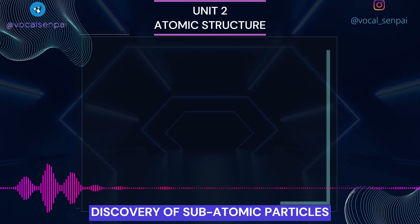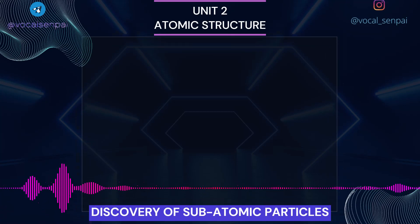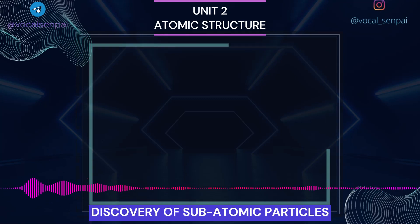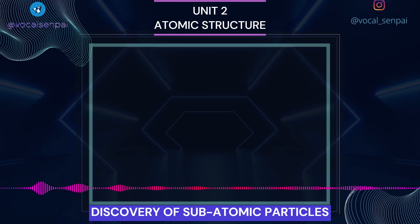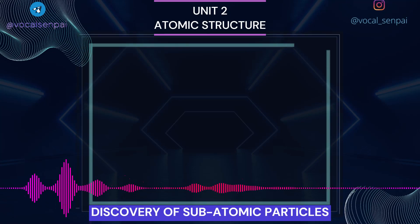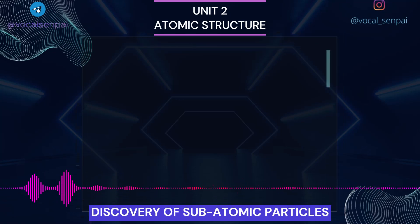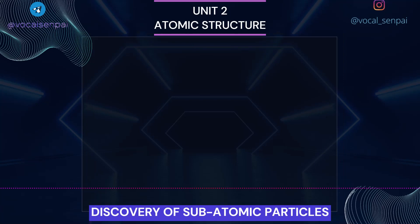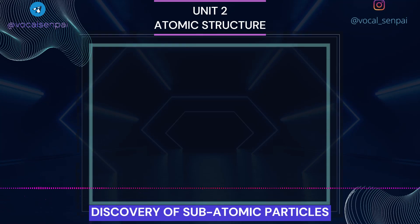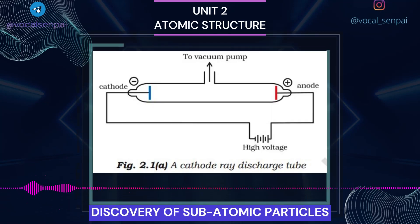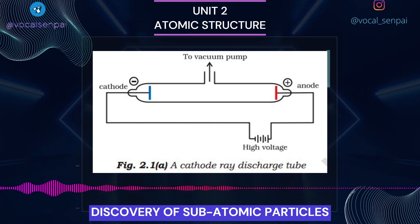Before we discuss these results, we need to keep in mind a basic rule regarding the behavior of charged particles: like charges repel each other and unlike charges attract each other. Discovery of Electron: In 1830, Michael Faraday showed that if electricity is passed through a solution of an electrolyte, chemical reactions occurred at the electrodes, which resulted in the liberation and deposition of matter at the electrodes. These results suggested the particulate nature of electricity. In mid-1850s, many scientists, mainly Faraday, began to study electrical discharge in partially evacuated tubes, known as cathode ray discharge tubes.